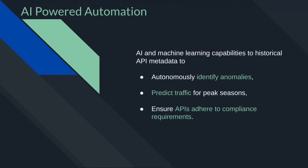AI-powered automation is very important from a security perspective. While manual inspection has limits, AI and machine learning are growing fast in that area. Using historical API metadata, it can perform anomaly detection, predict peak traffic — when to expect it based on historic data — and track which APIs are adhering to compliance requirements. These are all important from a security and operational perspective.